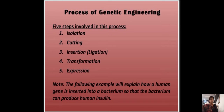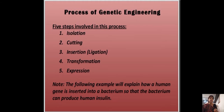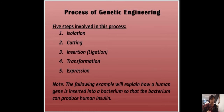The process of genetic engineering involves five steps: first, isolation; second, cutting; third, insertion; fourth, transformation; and fifth, expression. Different organism genes are isolated, then the particular DNA is cut with the help of molecular scissors, then ligation and insertion occur, so that a human gene is inserted into a bacterium.